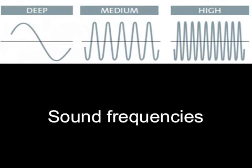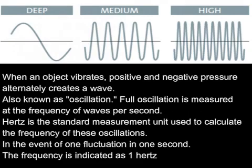When an object vibrates, positive and negative pressure alternately creates a wave, also known as an oscillation. A full oscillation is measured at the frequency of waves per second. Hertz is the standard measurement unit used to calculate the frequency of these oscillations. In the event of one fluctuation per second, the frequency is indicated as one Hertz.